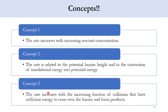Concept number 3 is that with the increase in number of collisions, the rate increases. With the increase in collisions, sufficient energy is provided to cross over the barriers and form products. So accordingly, the rate is directly proportional to the number of collisions.